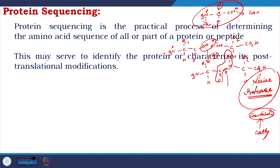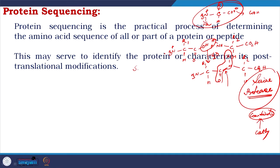Protein sequencing may serve to identify the protein or characterize its post-translational modifications. The protein is synthesized in the ribosome by covalently linking amino acids. But after translation is performed, there are enzymes in the cell which can modify the protein. For example, residues having hydroxyl groups — like serine, threonine, and tyrosine — can be phosphorylated. Other modifications include methylation and acetylation; these are post-translational modifications.